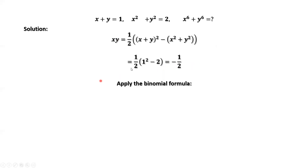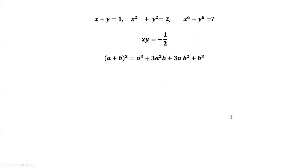The main idea to solve this question is to use the binomial formula. This is the binomial formula. In our situation, we consider a equals x squared and b equals y squared. We can rewrite x to the power of 6 plus y to the power of 6 as x squared to the power of 3 plus y squared to the power of 3.